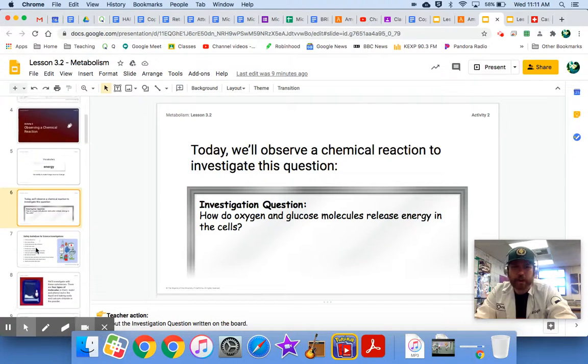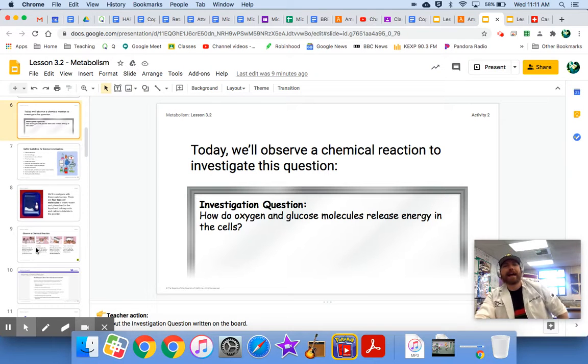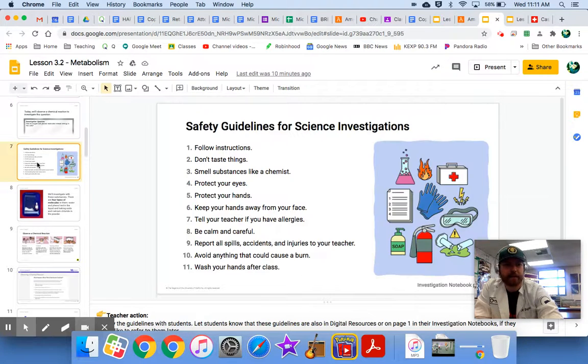You use energy when you need to move yourself, right? Your cells are producing energy all the time, because there's all sorts of things going on inside of your body that require energy. Energy that you don't even realize are happening and going on, but your cells are constantly doing that. So, energy, the ability to make things move or change. Here is our investigation question for today. How do oxygen and glucose molecules release energy in the cells? We identified oxygen and glucose as the molecules that we need for this chemical reaction to release energy, but how do they actually do it? So, we're going to try to focus on that today, and we're going to have a little demonstration that maybe helps us understand.